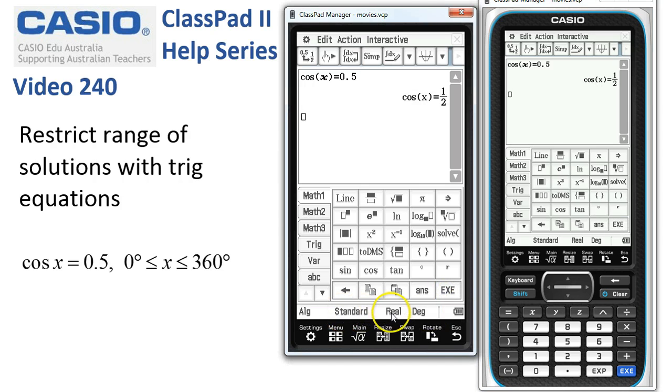Down at the bottom we're in standard, real, and degrees mode. We'll get exact values if we stay in standard.